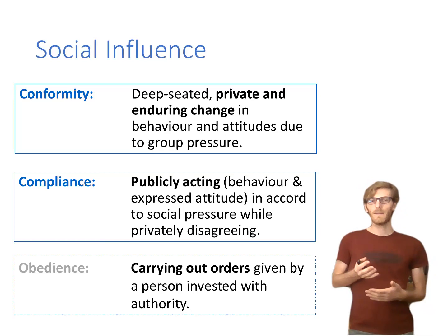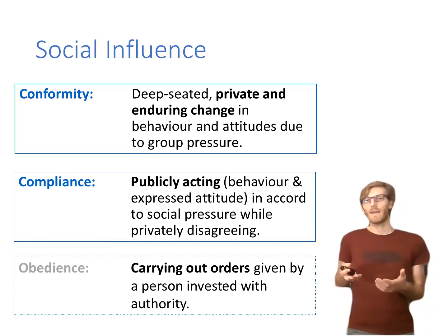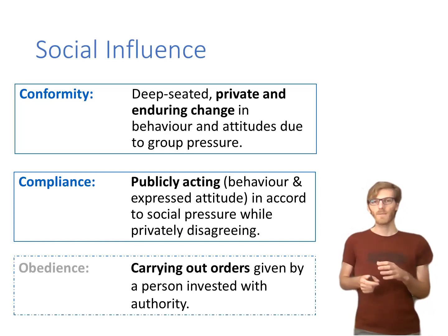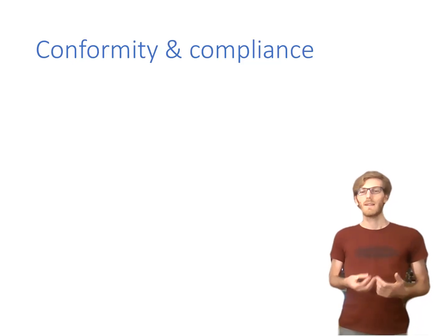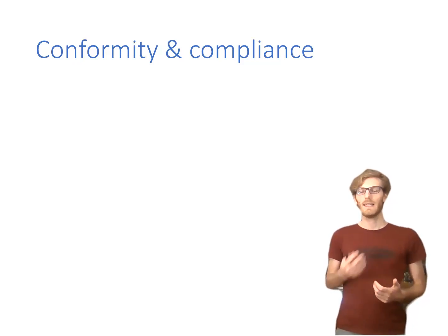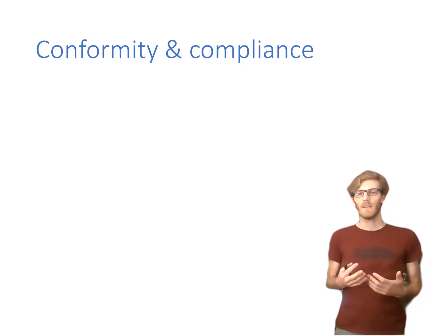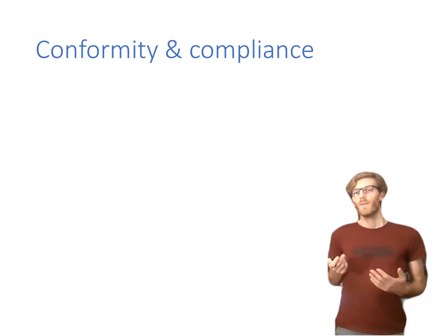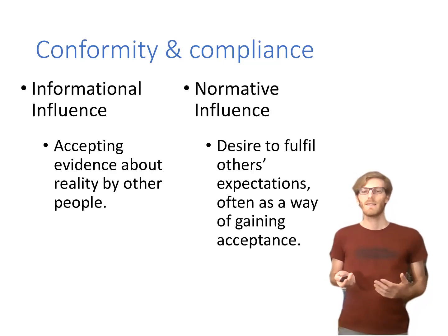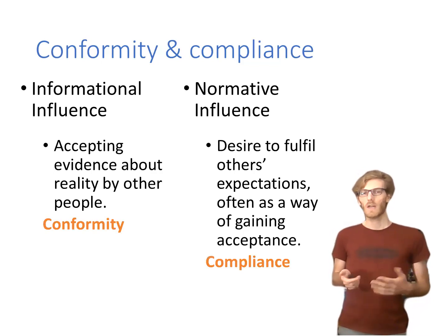The third concept, distinct from both, is obedience — just carrying out orders given by someone else. So what did we see in Asch's line study? Data showed that 75 percent of participants gave the wrong answer at least once, and 35 percent just went along with the group every single time. But do we know why they did it? Not really — there might have been conformity or there might have been compliance.